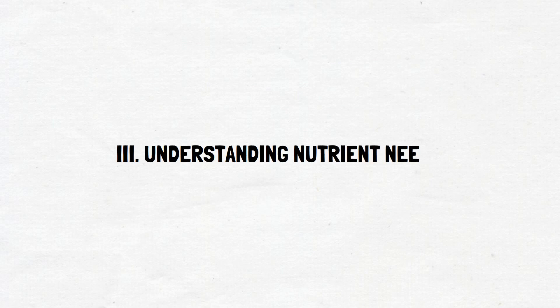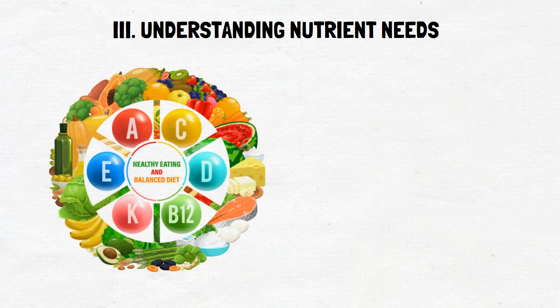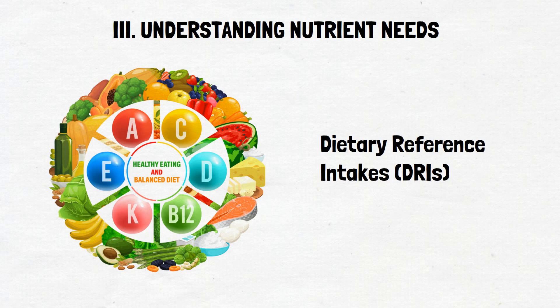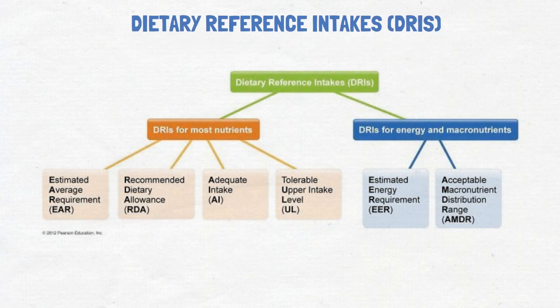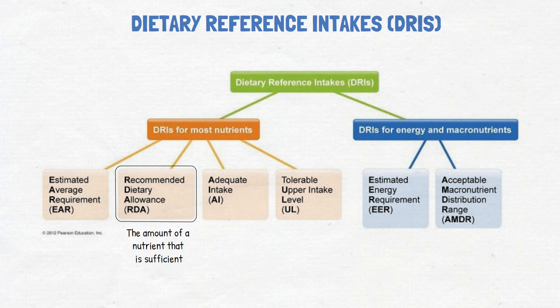Understanding nutrient needs. To help us achieve a healthy and balanced diet, various dietary guidelines have been developed. One of these is the dietary reference intakes, or DRIs. DRIs provide recommendations for the intake of essential nutrients and macronutrients. They are made up of four components. First is the recommended dietary allowance, or RDA — the amount of a nutrient sufficient to meet the daily requirements of most healthy individuals in a specific age and gender group.